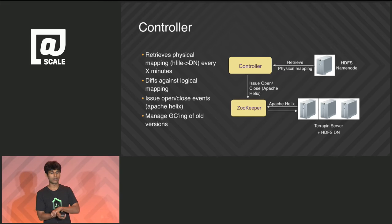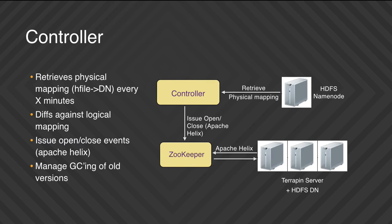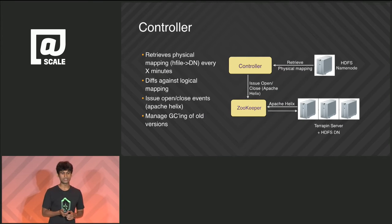I'll go into each of the components of Terrapin. The controller is responsible for retrieving the physical mapping from the HDFS data node every few minutes. It diffs that against the logical mapping — what the Terrapin servers are currently serving — and sends updates to Terrapin servers via ZooKeeper. We use the open source library Apache Helix, developed by LinkedIn, which is used by many companies for managing stateful systems. The controller is also responsible for garbage collecting old versions, which is very cheap — it just deletes them. All of this runs in a single thread to avoid race conditions.